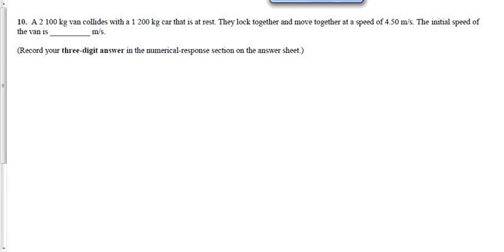This one says a 2,100-kilogram van collides with a 1,200-kilogram car that's at rest. They lock together at a speed of 4.5 meters per second. What's the initial speed of the van? So this is the car accident, traffic accident investigation that the police officer is doing, right?